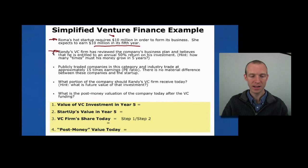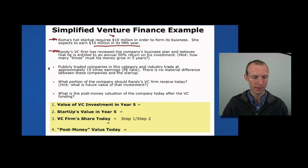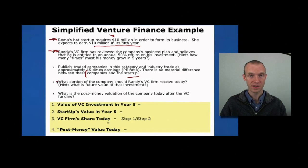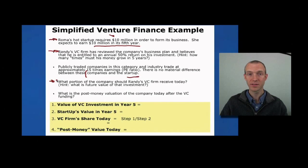So if Randy wants to make an annual 50% return on his investment, he's thinking through what percentage he has to own in Roma's startup if he's going to make an investment. He knows that publicly traded companies in this sector tend to trade at approximately 15 times earnings — that's the price-to-earnings ratio — and there's no material difference between these companies and Roma's startup. So the first question is: what portion of the company should Randy's VC firm receive today if he makes an investment of $10 million?